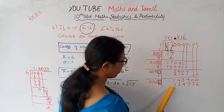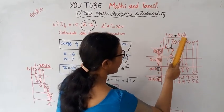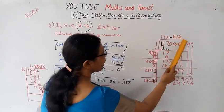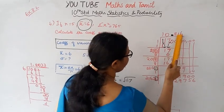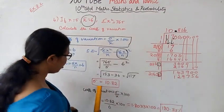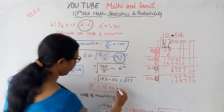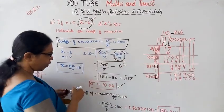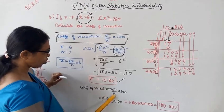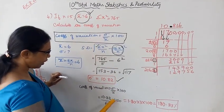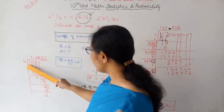Multiplying out gives 10.816. Rounding to two decimal places: since the third decimal is more than 5, we round up, so sigma equals approximately 10.82. Now substituting into the CV formula: CV = (10.82 / 6) × 100.